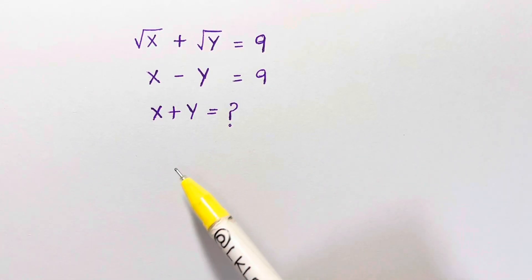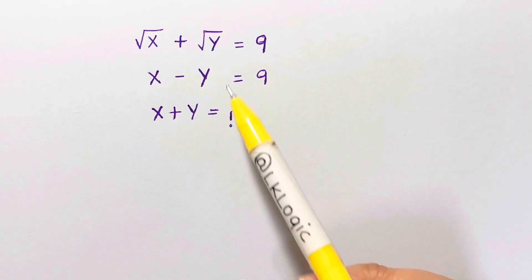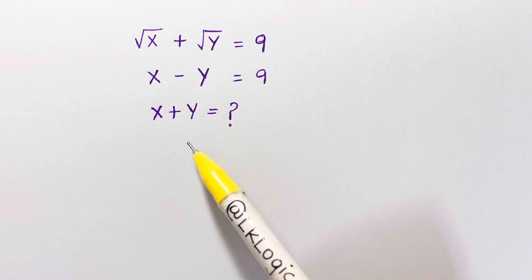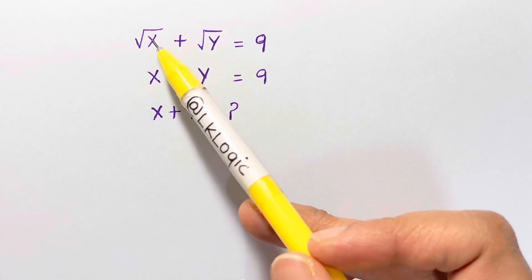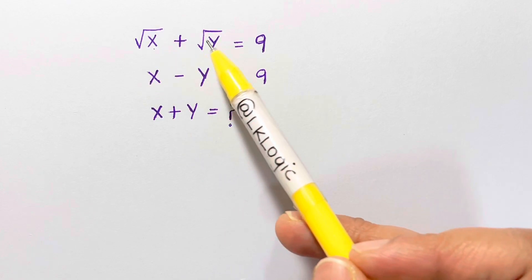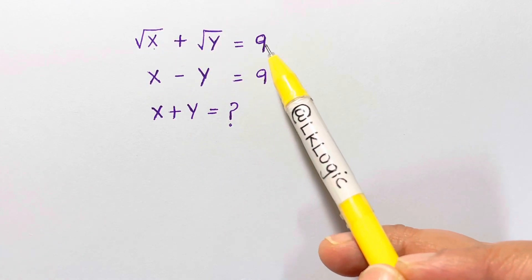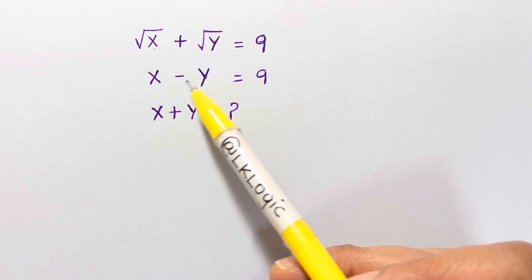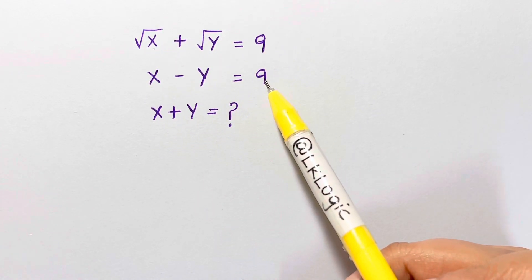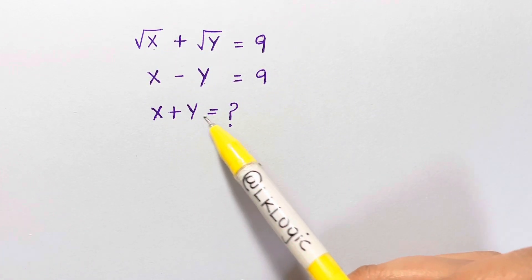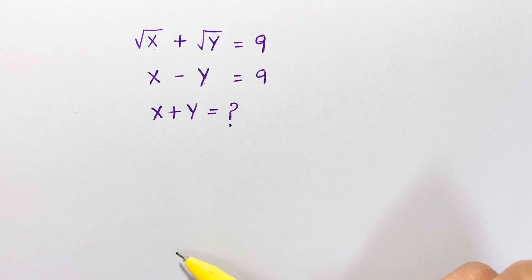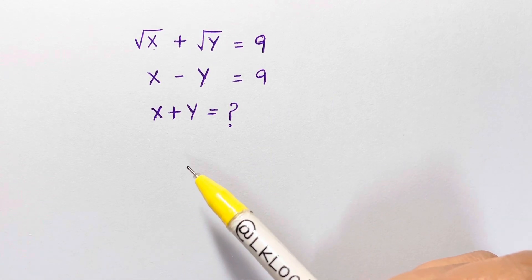Hi guys, I have an amazing math problem for you all. The equations are: square root of x plus square root of y equals 9, and x minus y equals 9. What is x plus y? Let's see.